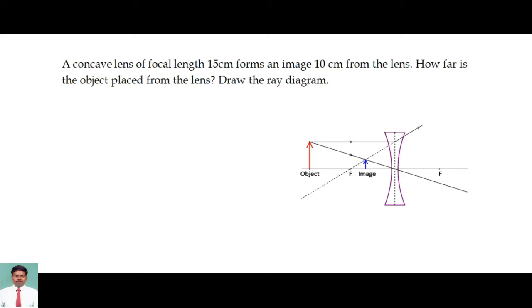A concave lens of focal length 15 cm forms an image 10 cm from the lens. How far is the object placed from the lens? Draw the ray diagram.